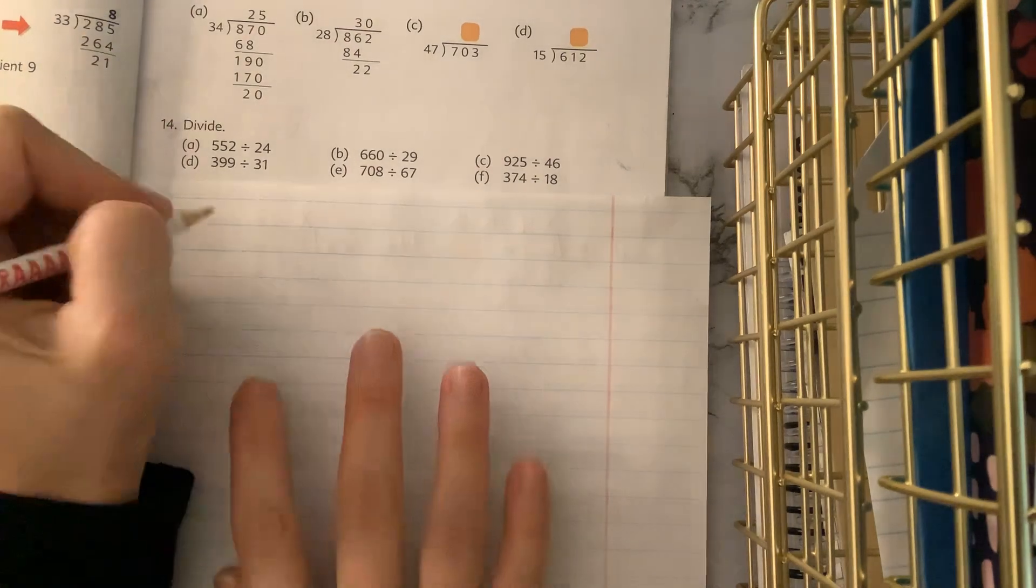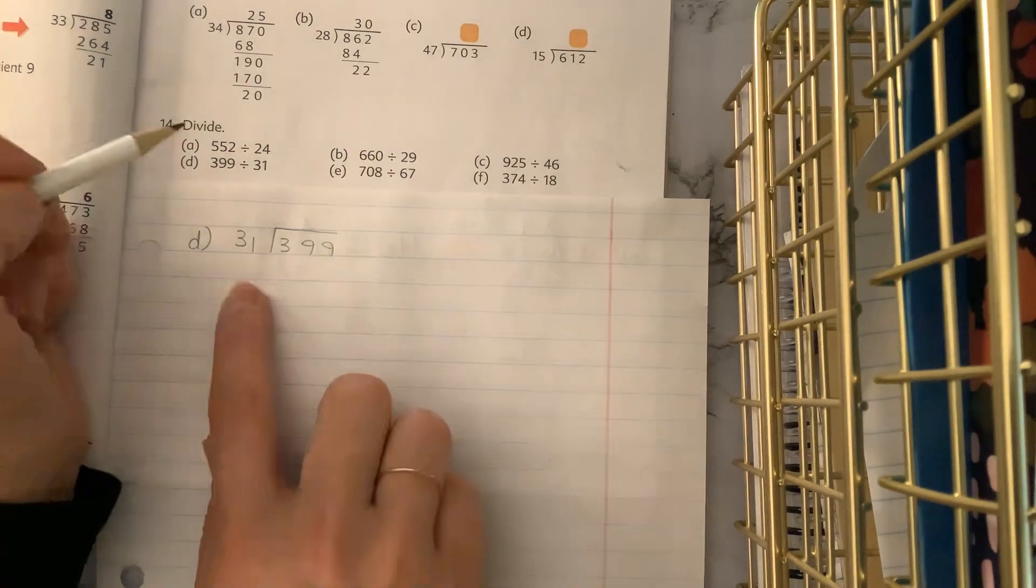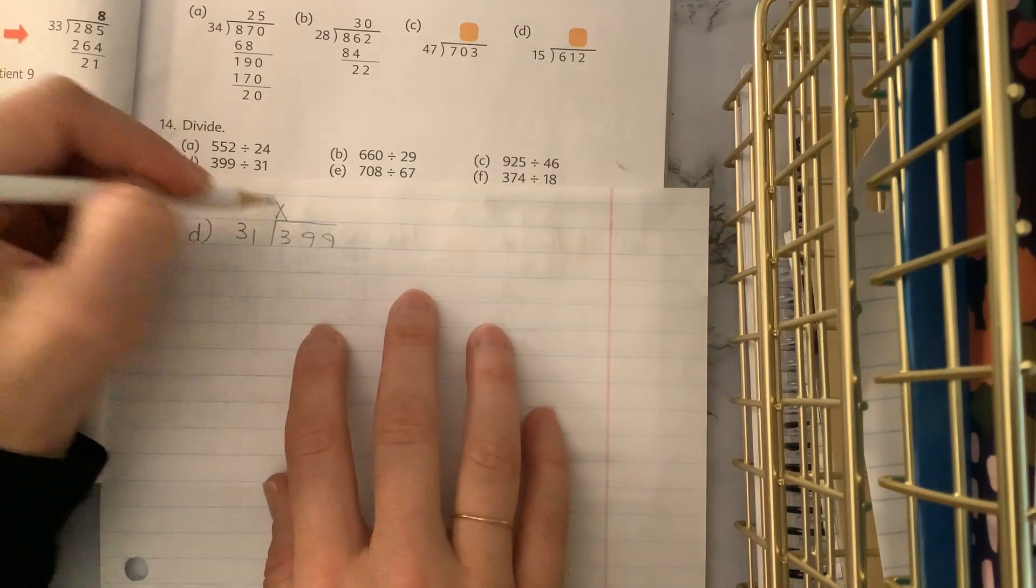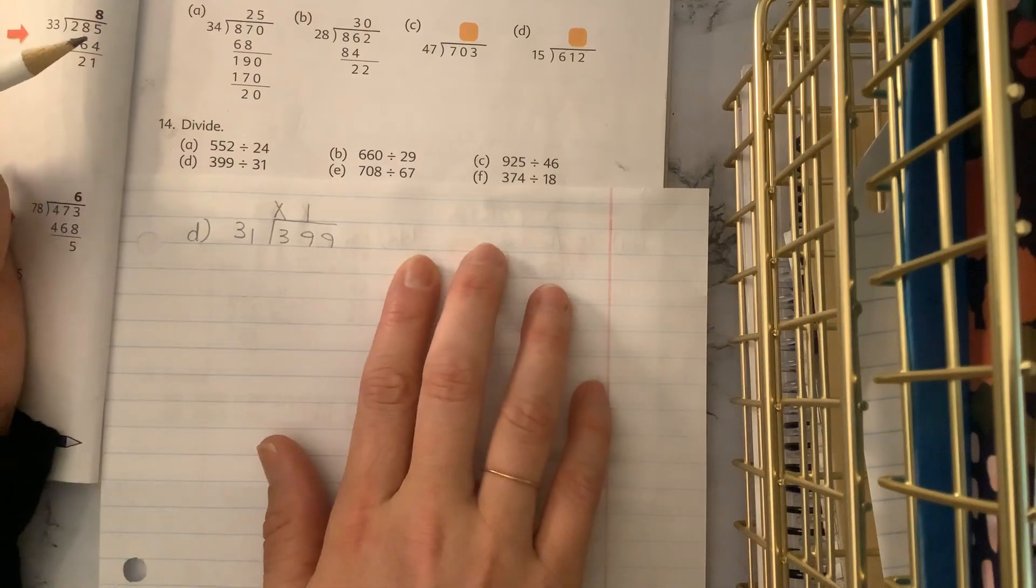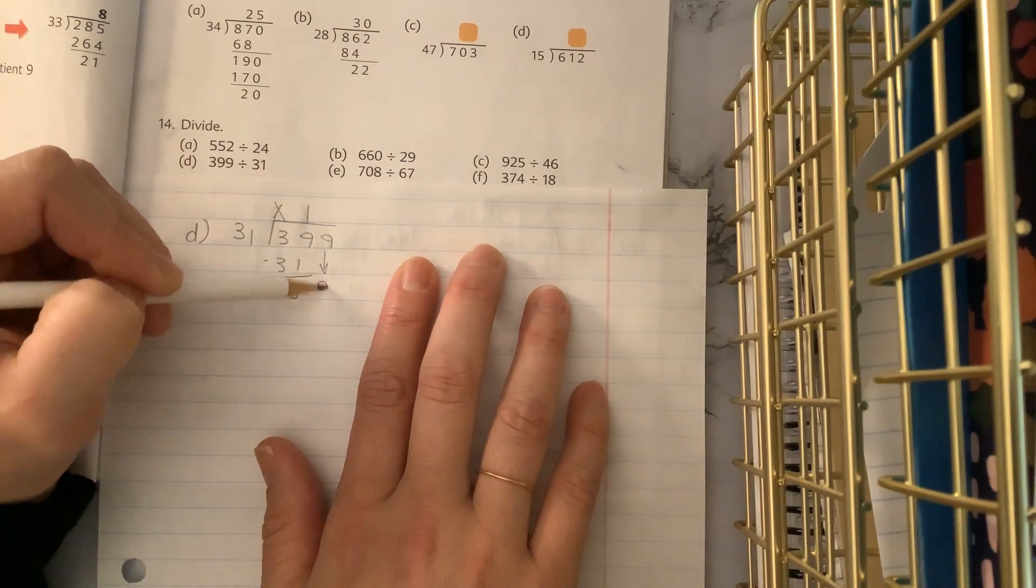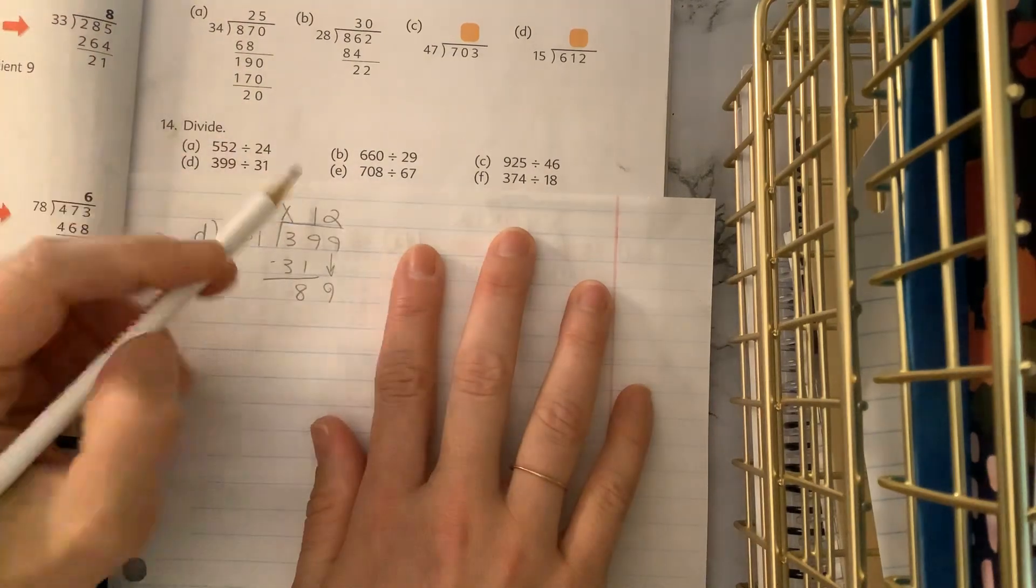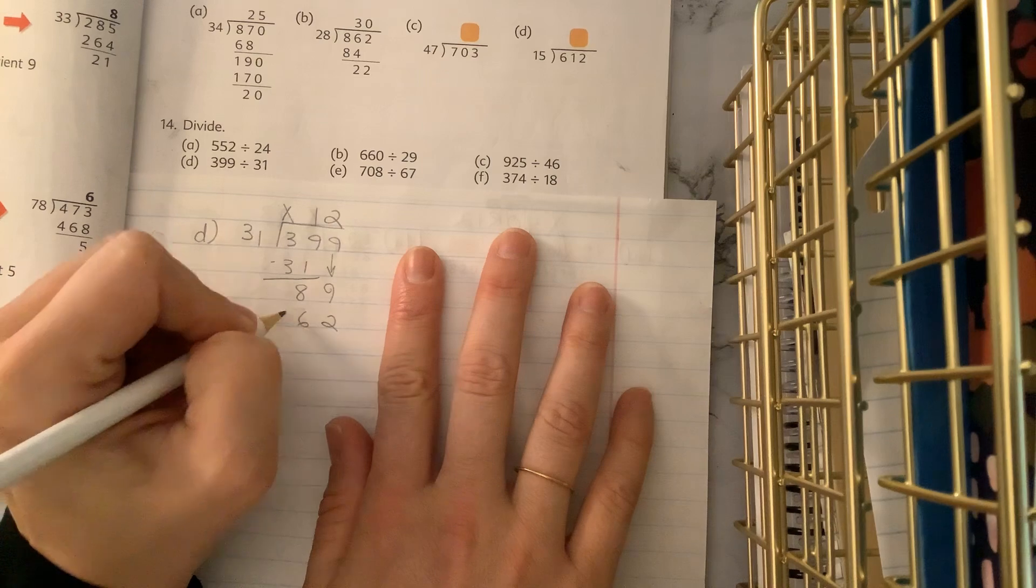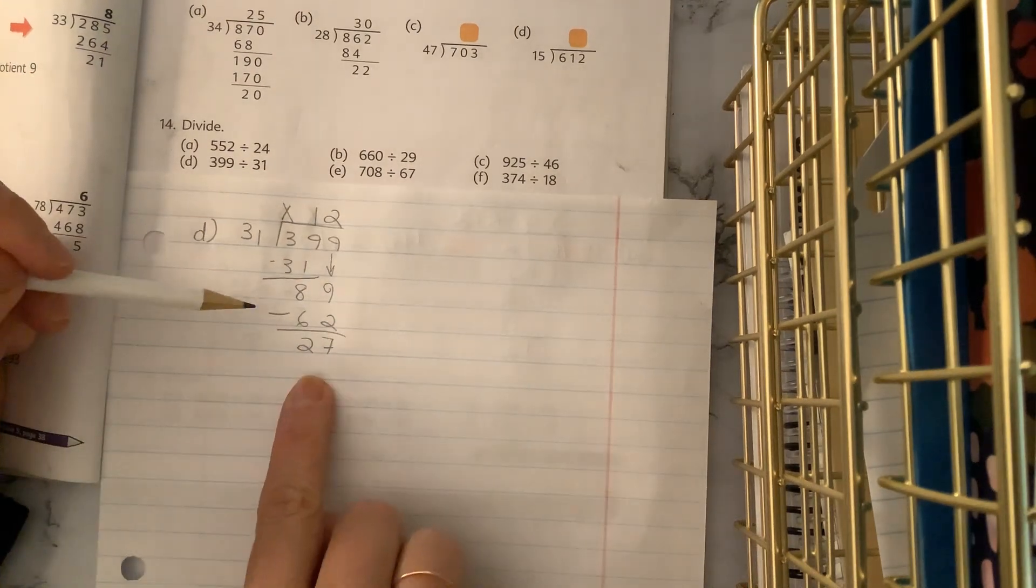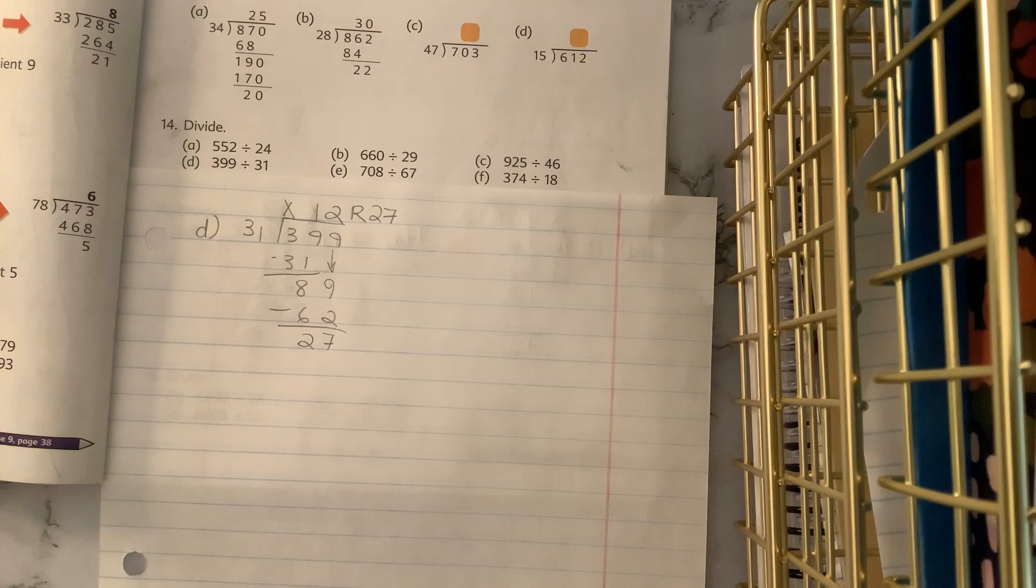All right, fifth graders. D is asking you to divide 399 divided by 31. So about 30, that's going to be our gauge. 31 does not go into three. How many times would it go into 39? Just the once. You can feel pretty confident about that. So we multiply and subtract. Nine minus one is eight. And then we subtract or bring down the nine. Remember 30, 60, 90, three would be too much. So we're going to just do the two. Two times one is two. Two times three is six. And we subtract. Nine minus two is seven. Eight minus six is two. Good news. That is less than 31. So our remainder looks set. 12 remainder 27. Hopefully you got that correct.